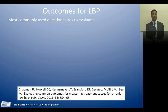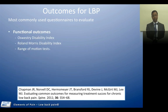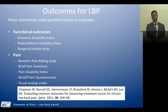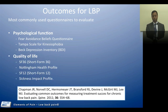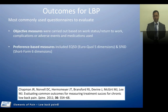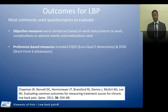How do we evaluate the outcomes from management strategies for lower back pain? A paper by Chapman and Norville published in Spine looked at the most common evaluatory tools. Functional outcomes were measured with the Oswestry Disability Score, Roland-Morris Score, and Range of Motion tests. Pain was evaluated by the Numerical Pain Rating Scale, Brief Pain Inventory, Pain Disability Index, McGill Pain Questionnaire, and Visual Analog Scales. Psychological function was assessed using fear avoidance beliefs questionnaires, Tampa Scales, and Beck Depression Inventories. Quality of life was measured using the SF-36, SF-12, Nottingham Health Profile, and the Sickness Impact Profile test. Objective measures such as return to work, work status, complications, adverse effects, and medications were also used. Preference-based measures included the EQ-5D and the SF-6D.